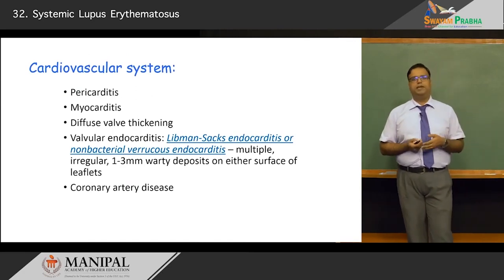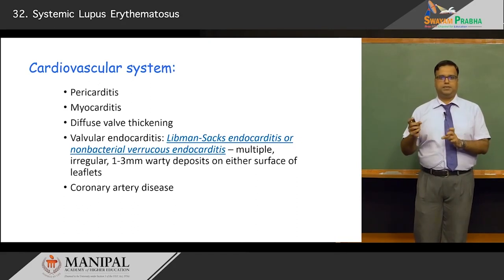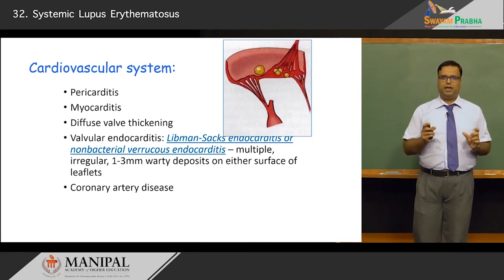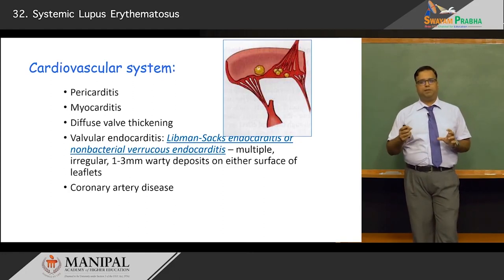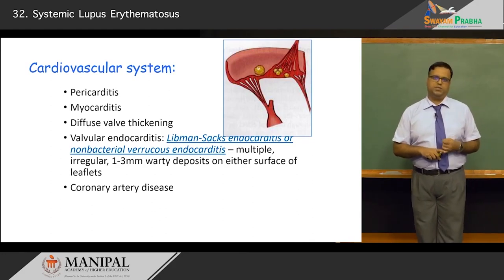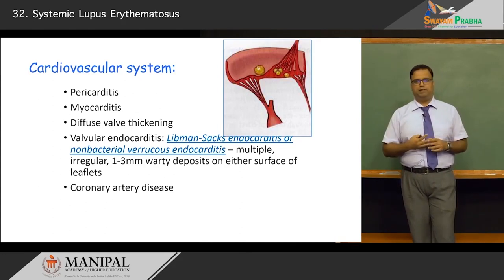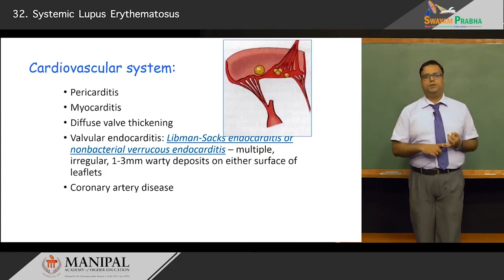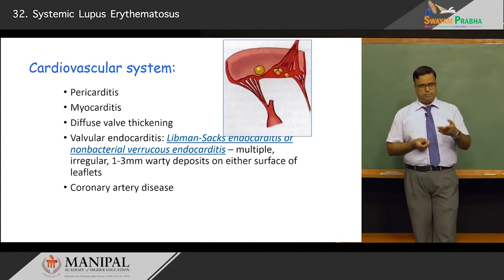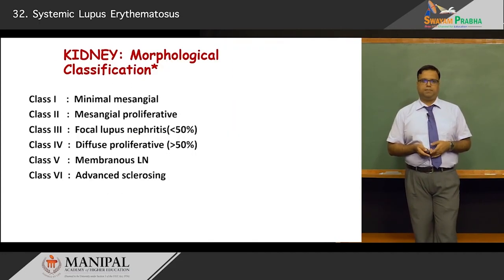In the cardiovascular system, all three layers of the heart can be affected. Notably, valvular endocarditis produces what is called non-bacterial verrucous endocarditis, also known as Libman-Sacks endocarditis. This affects valve leaflets on either surface, with small warty depositions ranging from one to three millimeters in diameter. These must be distinguished from infective endocarditis, which produces large, friable, bulky vegetations that destroy leaflets and chordae, and from rheumatic heart disease verrucae, which are also small and similar in appearance.